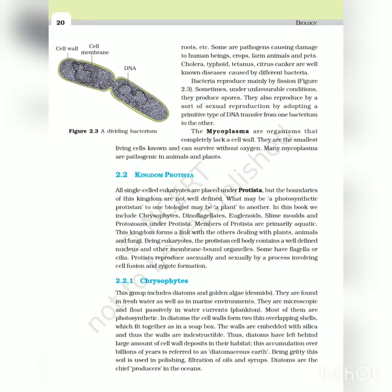Chrysophytes - this group includes diatoms and golden algae. They are found in fresh water as well as in marine environments. They are microscopic and float passively in water currents as plankton. Most of them are photosynthetic. In diatoms, the cell walls form two thin overlapping shells which fit together as in a soap box. The walls are embedded with silica and thus the walls are indestructible. Thus diatoms have left behind large amounts of cell wall deposits in their habitat - this accumulation over billions of years is referred to as diatomaceous earth. Being gritty, this soil is used in polishing, filtration of oils and syrups. Diatoms are the chief producers in the oceans.